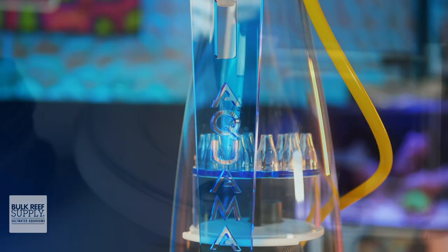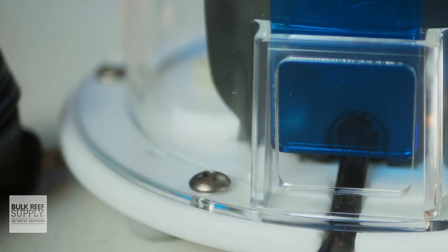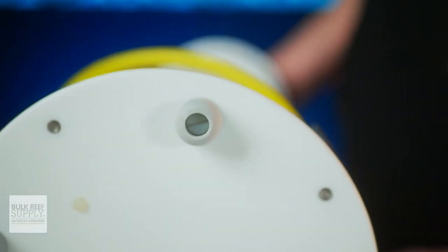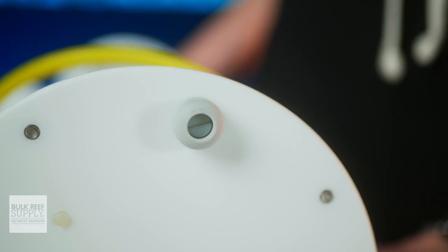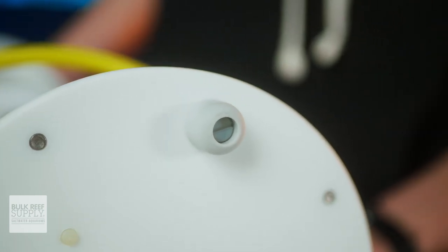I mean, they even opted to ditch the typical nylon thumb screws for metal screws, which I presume are titanium, and instead of the press fit rubber nubs under the base of other budget options, these skimmers have larger rubber feet that are fastened firmly in place.